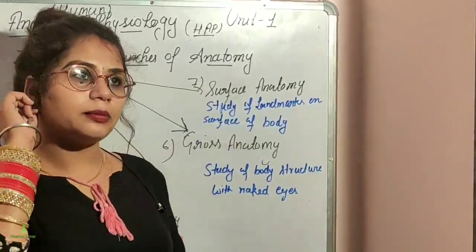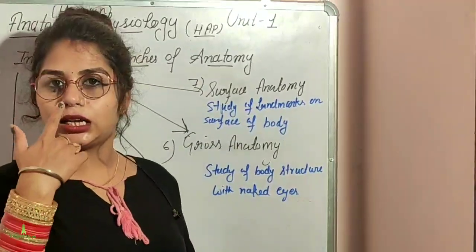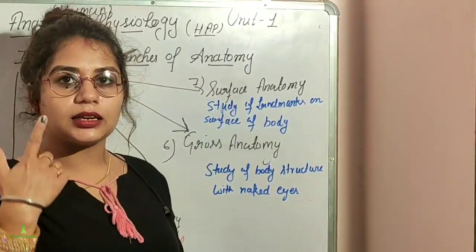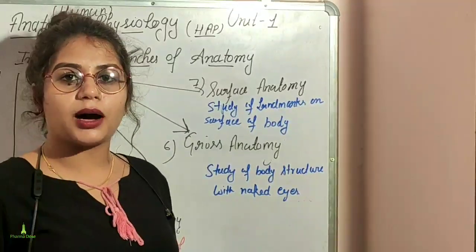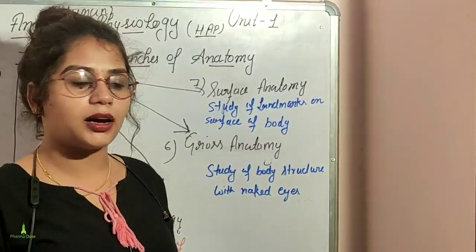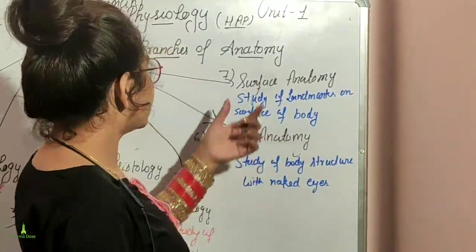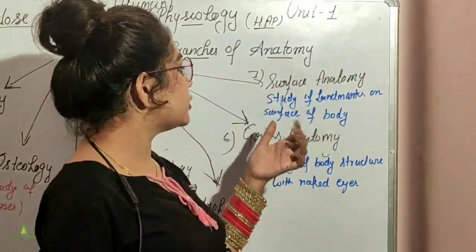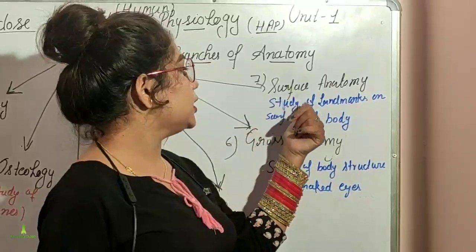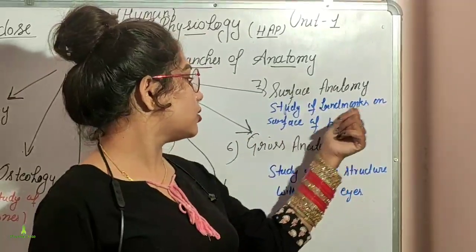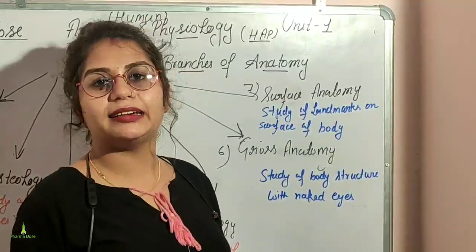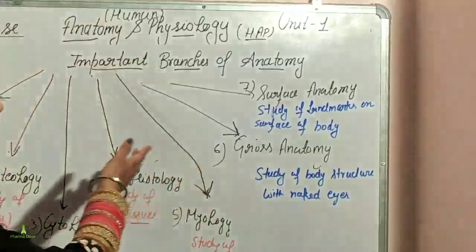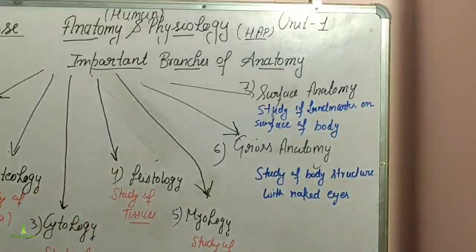Other visible structures include the ear, nose, lips, and mouth — all of which we can study. Surface Anatomy is the study of landmarks on the surface of the body, for example the back and chest.